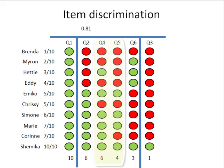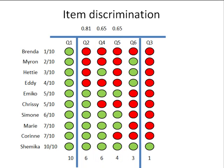Questions 4 and 5 are more typical of what you might see in a real test. On the whole, people scored 6 out of 10 and 4 out of 10 on these questions respectively. In general, people who did worse on the test did worse on these questions and vice versa, however there are a few discrepancies. The item discriminations are still positive — the red dots are nearer the top, corresponding to people who did worse overall — but they are slightly less good at discriminating compared to question 2.